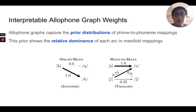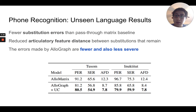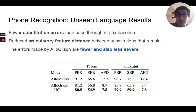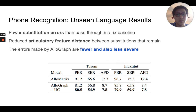What we end up with is allophone graph weights that are interpretable, and we also find that models using these allophone graphs result in fewer substitution errors and also less severe substitution errors than models where we simply use a pass-through matrix to represent the mappings.